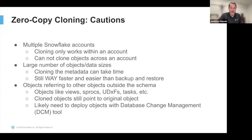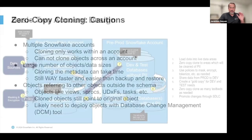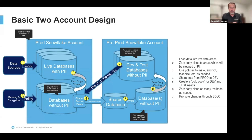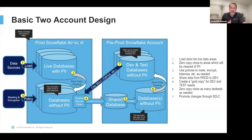The last pattern I want to show is for when you have multiple Snowflake accounts and can't use cloning across them. You still need pre-production environments — remember, we're not testing in production. This approach is still much easier than the alternative. Imagine your production Snowflake account on the left and a pre-production account on the right. In the pre-production account you could have dev, test, and stage all within one account. In your production account you have your live databases with PII.